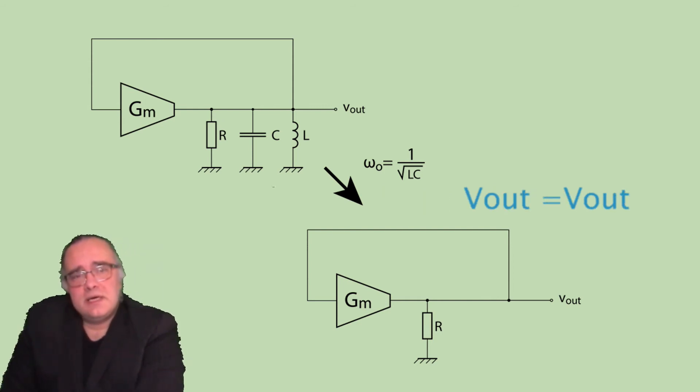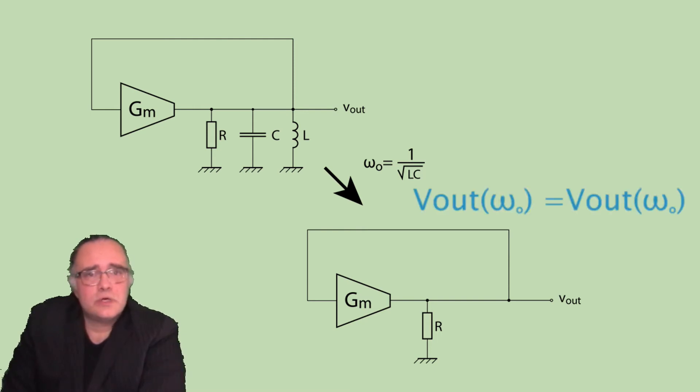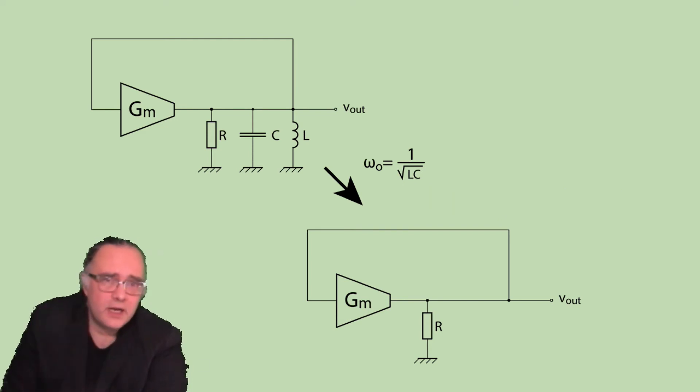This means that we can maintain stable oscillation because we satisfy the Barkhausen criteria for oscillations. In other words what comes inside the loop will go through the loop and will arrive at the same point exactly in the same magnitude and exactly in the same phase. These are the Barkhausen criteria for oscillation.